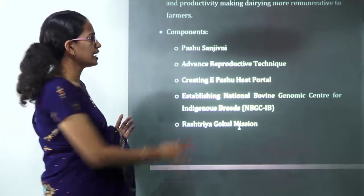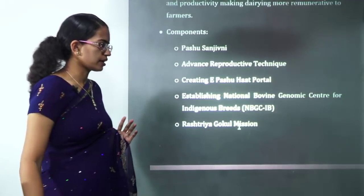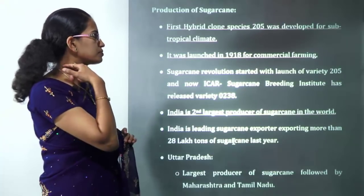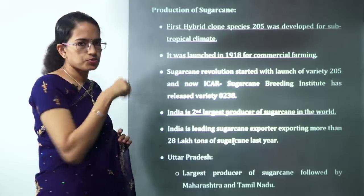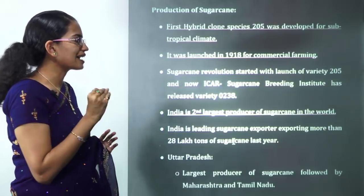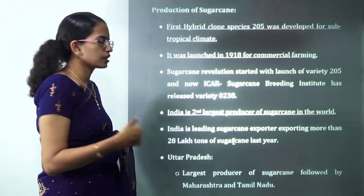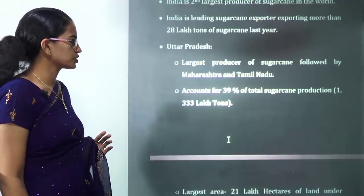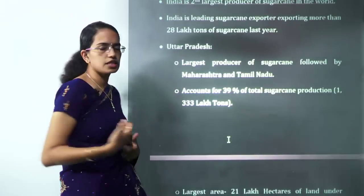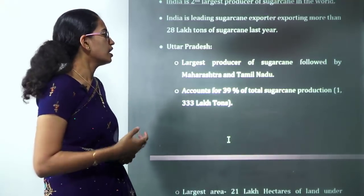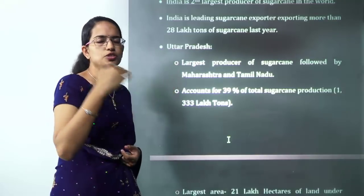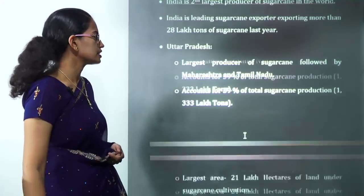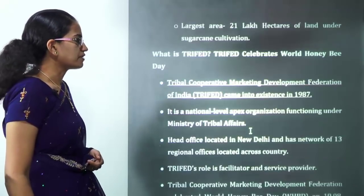In sugarcane production, the first hybrid clone species for subtropical climate was developed in 1918. India is the second largest producer of sugarcane in the world. Among Indian states, Uttar Pradesh is the largest producer, followed by Maharashtra and Tamil Nadu.